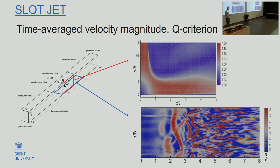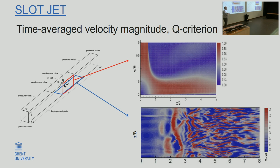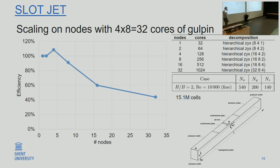Here you see some results. This is the average velocity in a side plane — the jet comes from the top and impacts on the bottom, then diverts right and left. With a top view of the bottom, you can see the Q criterion close to the bottom wall. This is a typical view of an LES simulation: not smooth pictures, but very chaotic flows due to turbulence, at Reynolds number 10 to the fourth.